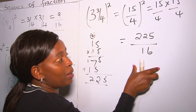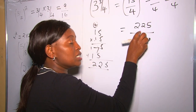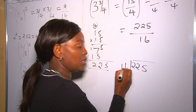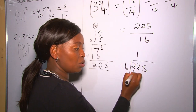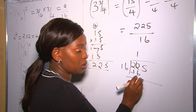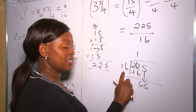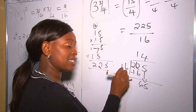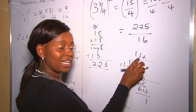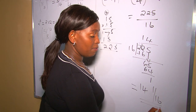Putting them together: 7 plus 5 is 12, carry 1, which gives 225. So our numerator is 225. Four times 4 is 16. Our answer 225 over 16 is an improper fraction — we never leave the answer in improper fraction form. So we divide: 225 divided by 16. 16 goes into 225 fourteen times because 14 times 16 is 224, leaving a remainder of 1. Our answer is 14 and 1 over 16.